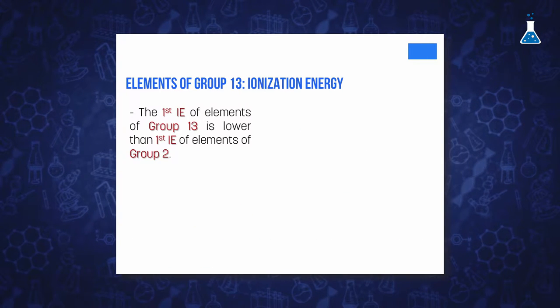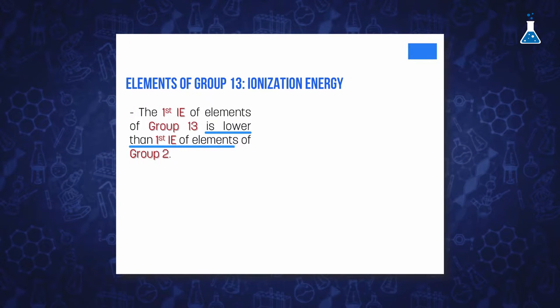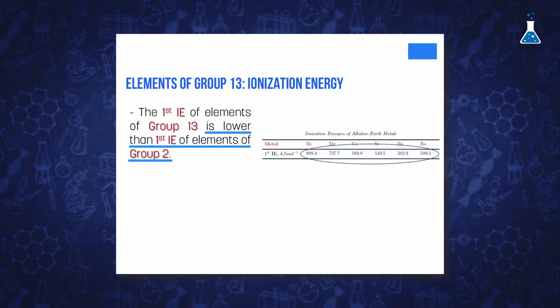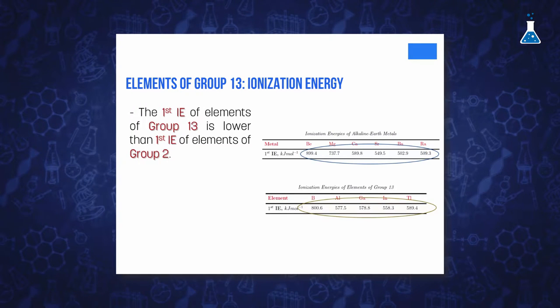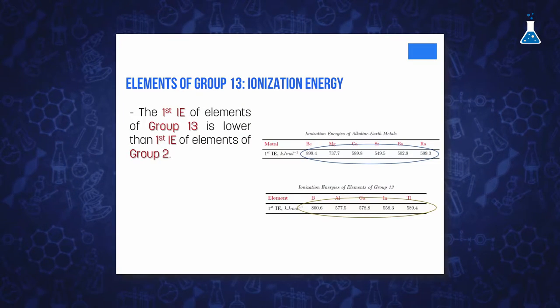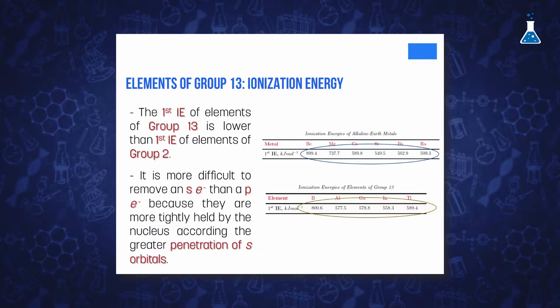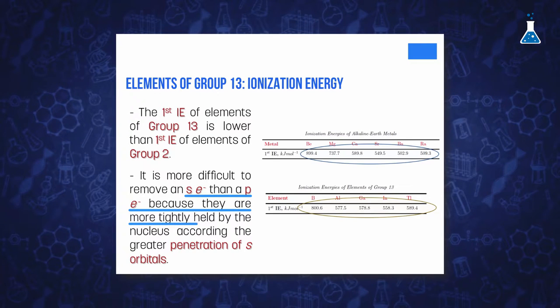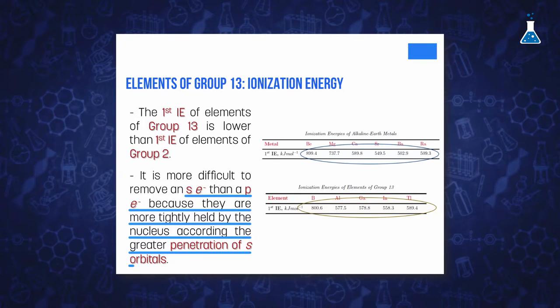The first ionization energy of these elements is lower than that observed in alkaline earth metals, because the first electron removed for elements in Group 13 is located in a p orbital, whereas for elements in Group 2 it is removed from an s orbital. The second and third ionization energies of these elements are quite high, because it is necessary to remove s electrons. The greater energy required to remove s electrons compared to p electrons can be explained because electrons in an s orbital are more tightly held by the nucleus due to the greater penetration of the s orbital.